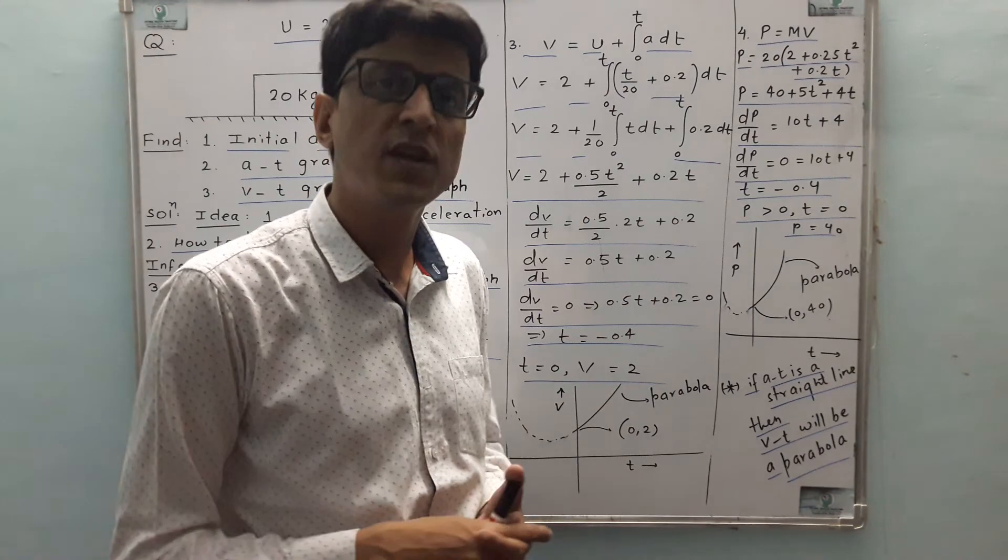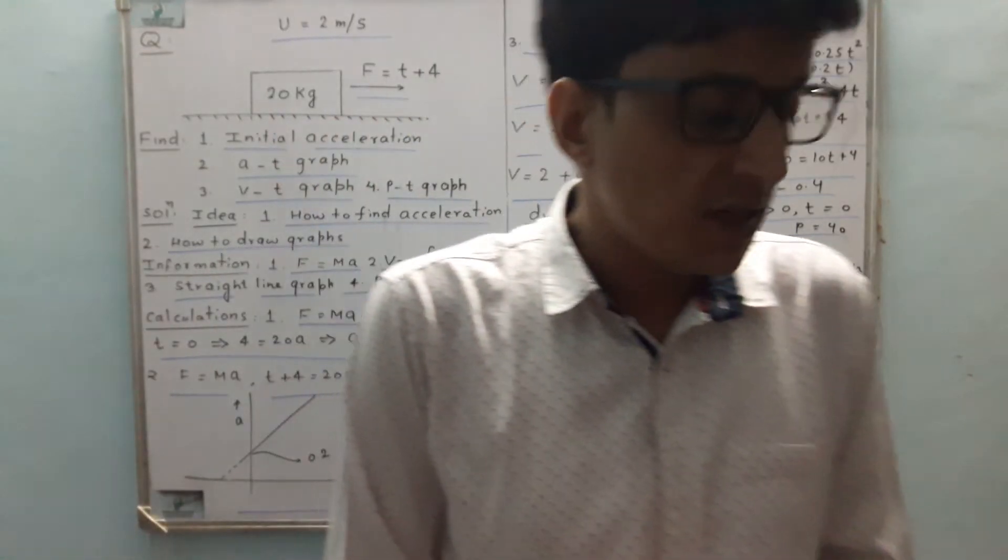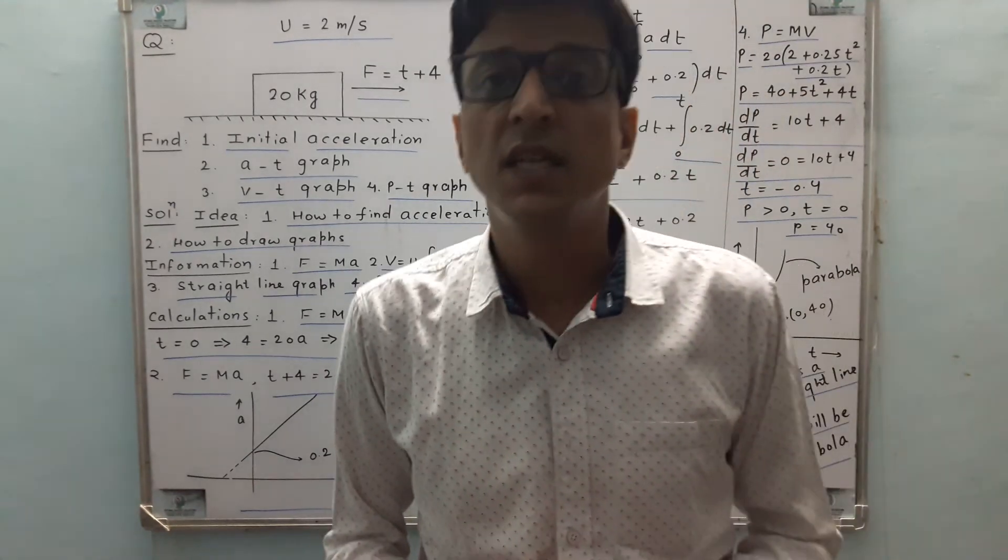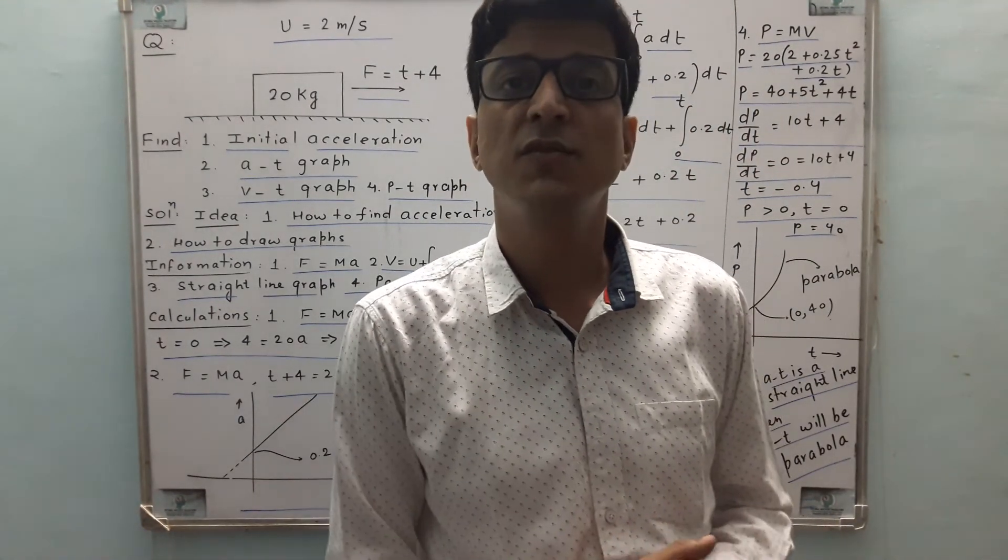The inferences that we can draw from these calculations is that if a-t graph is a straight line, then v-t and p-t graphs will be parabolas, because of the degree of t in that.